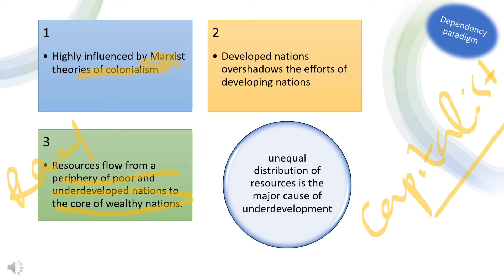Poor countries exported primary commodities to the rich countries, who then manufactured products out of those commodities and sold them back to the poorer countries at a high price. Mainly the wealthy nations are exploiting the poor nations. Theorists also identified that the unequal distribution of resources is a major cause of under-development.